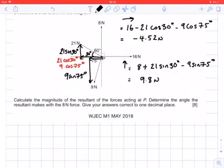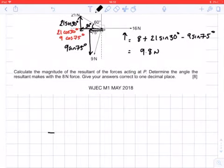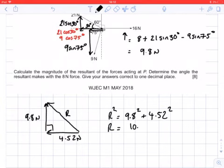Now I've got my two overall horizontal and vertical forces. If I draw a triangle of forces, I've got 4.52 newtons acting to the left and 9.8 newtons acting vertically upwards. I need to find the resultant force, so I'll do a Pythagoras calculation. R squared equals 9.8 squared plus 4.52 squared, which gives an overall resultant of 10.8 newtons.